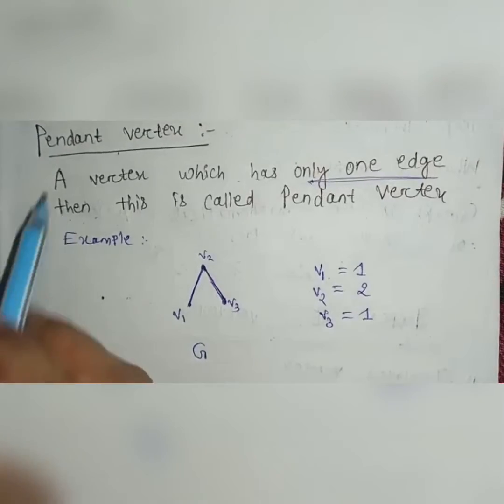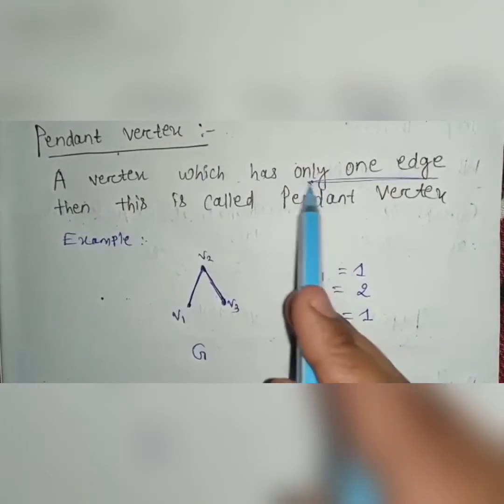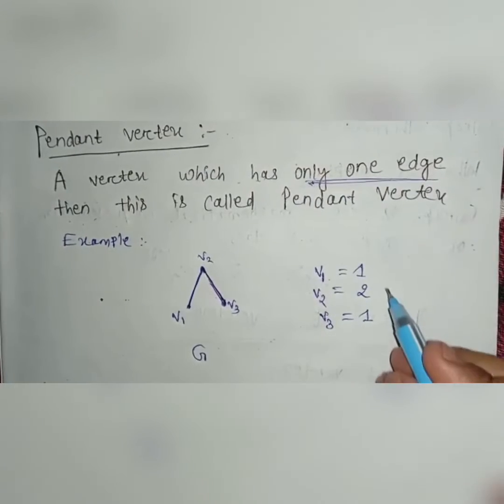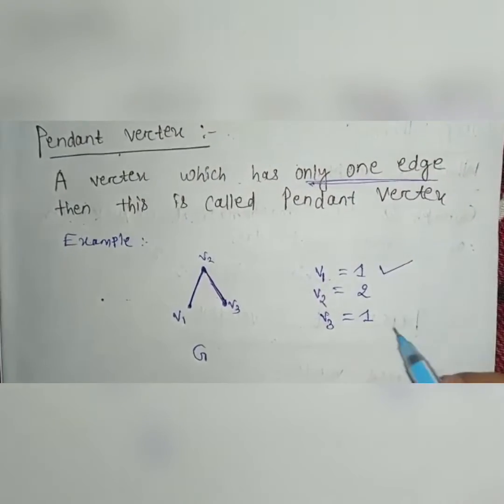So the definition is Pendant Vertex has only one edge. So who has only one edge? That is V1 and V3.